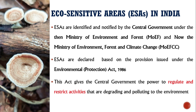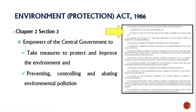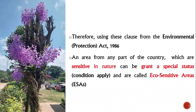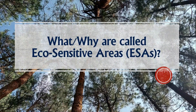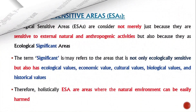Eco-sensitive areas are based on the provisions issued under the Environmental Protection Act 1986. If you see Chapter 2, Section 3 of the Environmental Protection Act 1986, this clause gives the central government the power to take measures to protect and improve the environment and to control environmental pollution. Therefore, these clauses from the Environmental Protection Act 1986 bestow the power on the central government that an area from any part of the country which is sensitive in nature can be granted a special status and is called an eco-sensitive area.